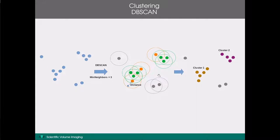Suppose we wish to cluster the same localisations we just saw. Using the DBscan algorithm, this means we are going to define a small neighbourhood around each of the localisations. This is displayed here as a circle, and the radius of this circle is called the distance. The measure of local density around each localisation is simply the amount of localisations that lie inside its circle. The threshold we apply to determine whether or not a cluster should be present here is called minimum neighbours, and in this example we set this value to 3.